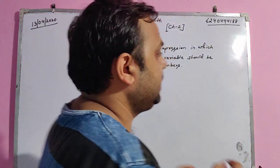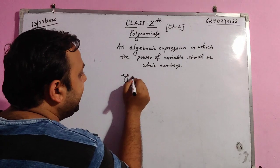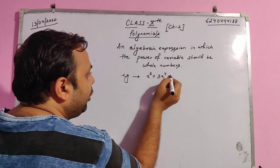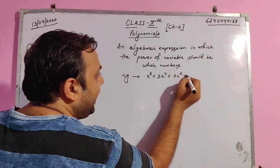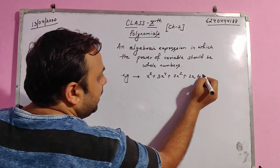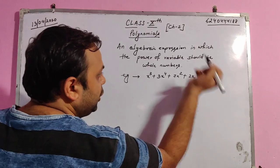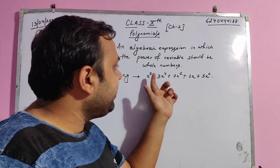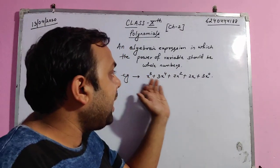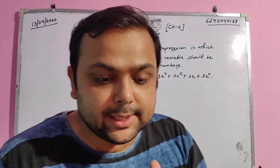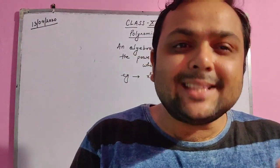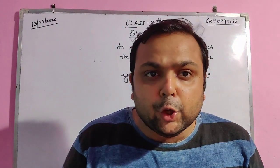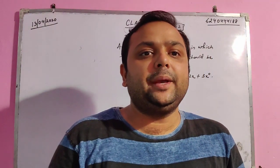For example: x³ + 3x⁴ + 7x² + 2x + 3x⁰ — this is an algebraic expression in which the variable x has whole number powers. In class 9 we dealt with cubic polynomials, factorization of quadratic polynomials, and algebraic identities.